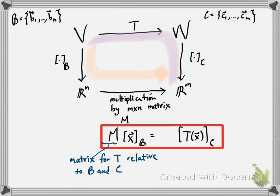What we have is: if you have a linear transformation between two finite dimensional vector spaces, and you're willing to choose a basis for each of those vector spaces, then you can represent the map by multiplication by a matrix. That's the matrix T that we call the matrix for T relative to B and C.